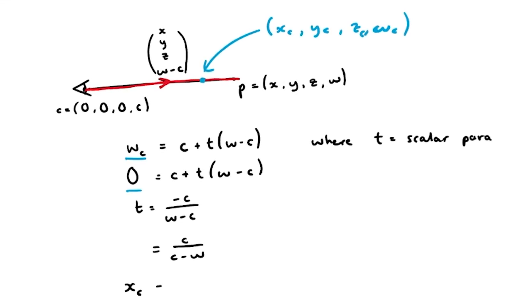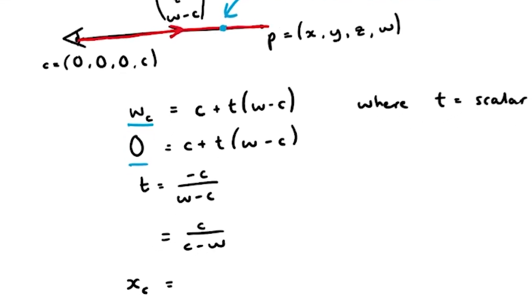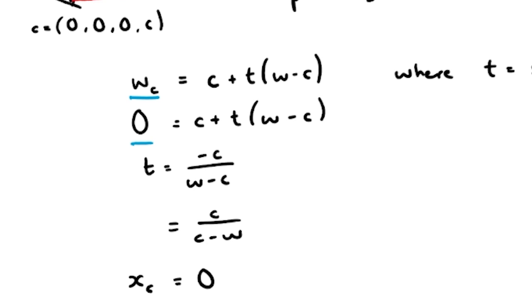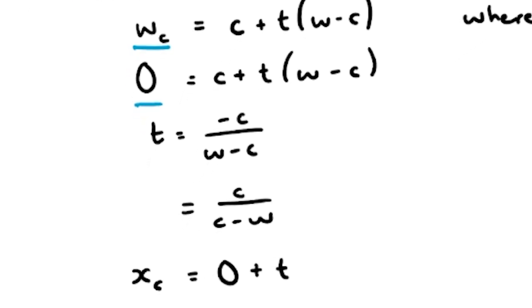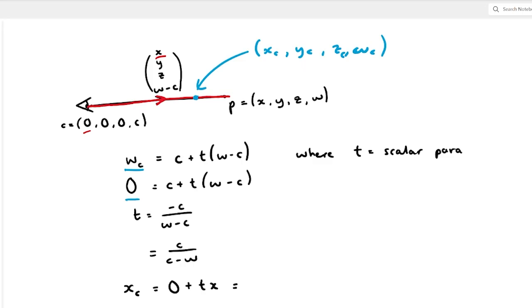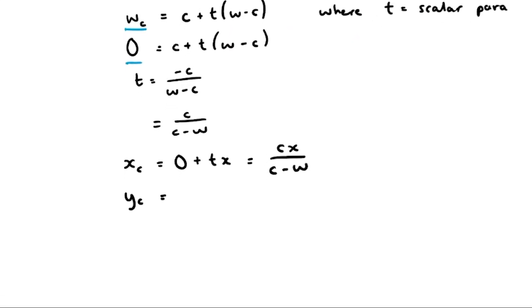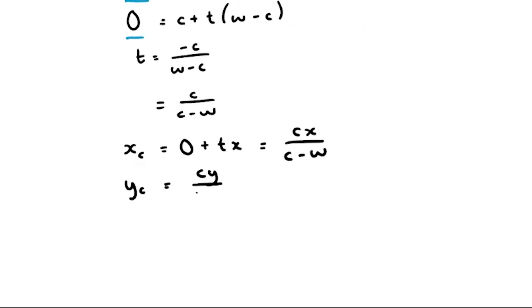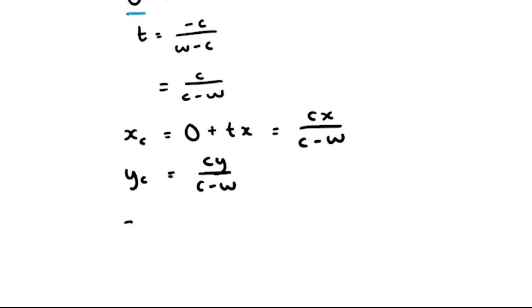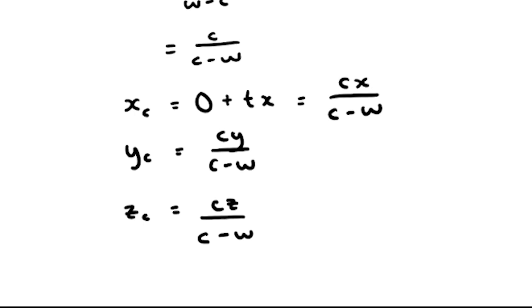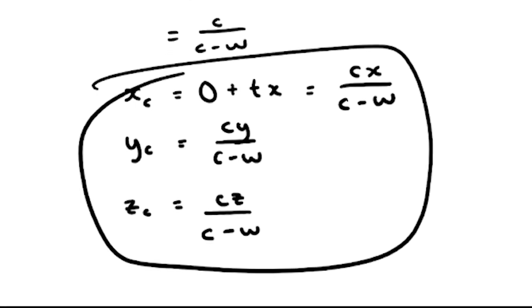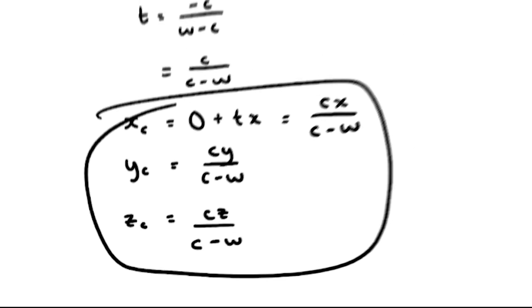Now that we know what t is, we can find the x component of our 3D image for our 4D point, which is equal to 0 from this camera here, plus t lots of x, which is equal to c x over c minus w. Now likewise, yc is equal to c y over c minus w. And zc is equal to c z over c minus w. And this is our image of our 4D cube or 4D point.